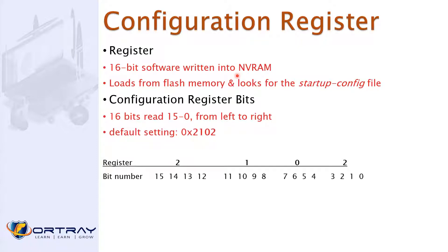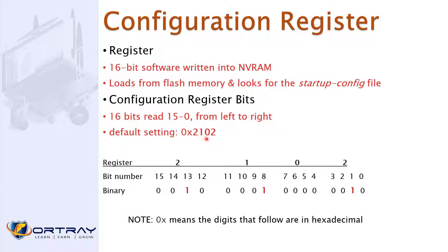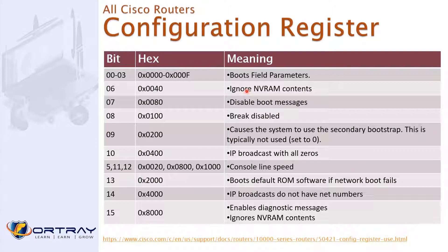These are the configuration register values — the default is 0x2102. This is likely to appear as an interview or exam question. With value 0x2102, the bits indicate the router should load from flash memory and look for the startup configuration. If you want different boot behavior, you can apply other combinations, and the router will behave accordingly. These alternate values are mostly used for troubleshooting purposes.